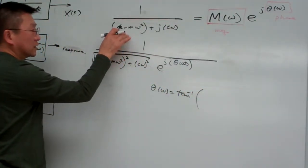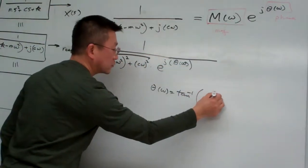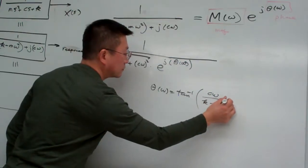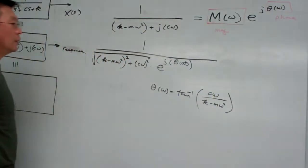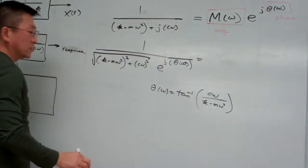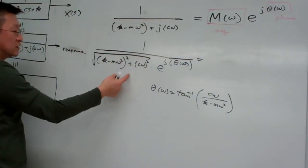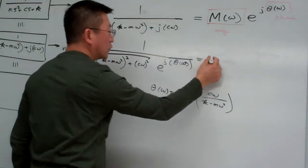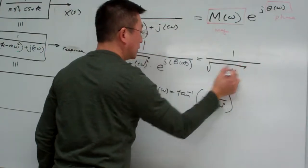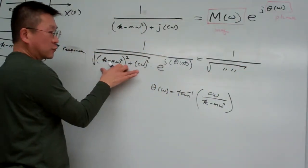So this one equal to this. So this is the numerator, this is the denominator, so basically this one would be equal to one divided by the contents inside the square root.